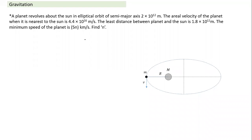Let's look at one question based on this application. A planet revolves around the sun in an elliptical orbit. What are things which are given here? The semi-major axis is given, and the area velocity of the planet when it is nearest to the sun is given. Any point of orbital motion, area velocity will be the same — it won't change. The least distance of the planet from the sun is also given.